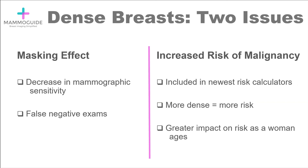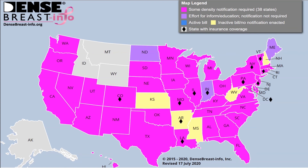The Tyrer-Cuzick version 8 model includes breast density as one of its risk factors. In general, the more dense the breast tissue, the higher the risk, and this has a greater impact as a woman ages — a woman with extremely dense tissue at age 30 does not carry as high a risk as a woman in her 70s with extremely dense tissue. A map shows how widespread breast density notification has become across the United States, with many states now also mandating insurance coverage for supplemental screening with ultrasound.